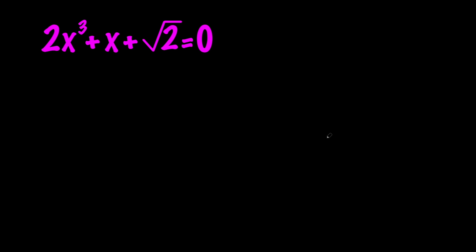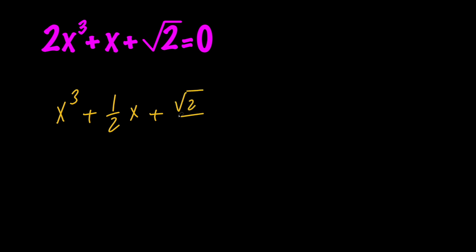So let's go ahead and solve this for x, and in order to do that, first of all, let's go ahead and divide everything by 2. So we're going to get x cubed plus 1 over 2 times x plus root 2 divided by 2 equals 0.